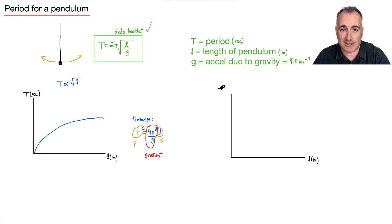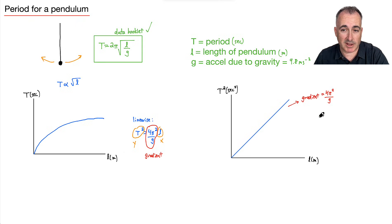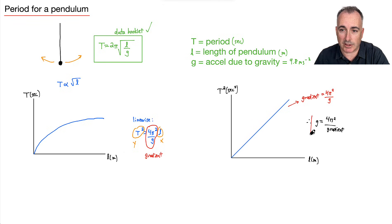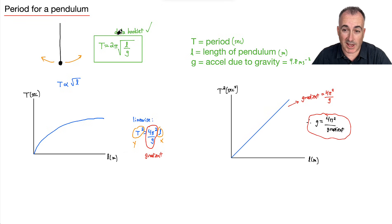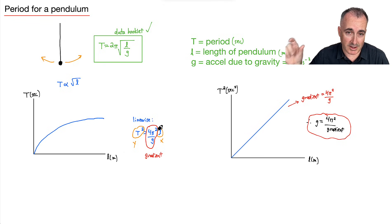A graph of T² in seconds squared against l gives a straight line, where the gradient equals 4π²/g. That means g equals 4π² over the gradient. So if you did an experiment measuring the period of oscillation for pendulums of different lengths, and plotted T² versus l, you could actually find the acceleration due to gravity from the gradient. Linearizing is such an important skill — you can take any equation that doesn't look linear, make it linear, and extract physical meaning from the gradient.